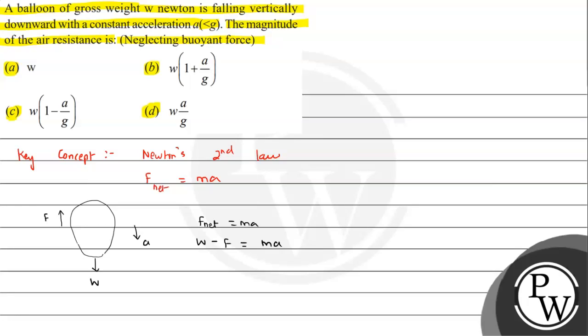So m is the mass of the balloon we are considering. So we can see w minus ma will be equals to f.